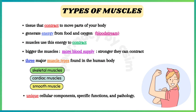Muscles are tissues that contract to move parts of your body. Muscles generate energy from food and oxygen that can come through your bloodstream, and use this energy to contract. The bigger the muscles are and the more blood supply they have, the stronger they can contract.